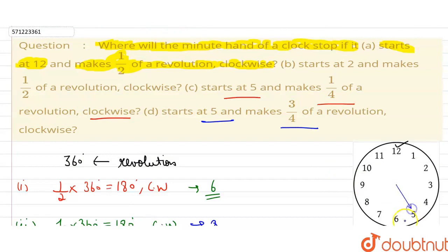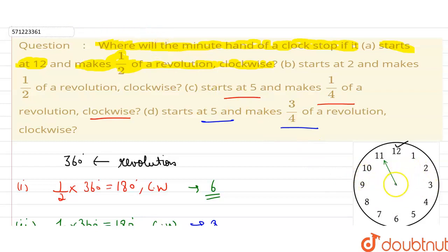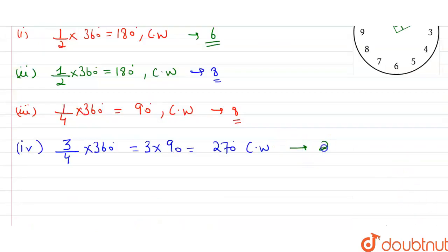It starts at 5 at the initial position and moves 270 degrees. First, we move it 180 degrees, which brings it to 11. Now we have to move it another 90 degrees to complete 270 degrees. Moving another 90 degrees from 11 brings it to 2. So the minute hand ends up at 2.